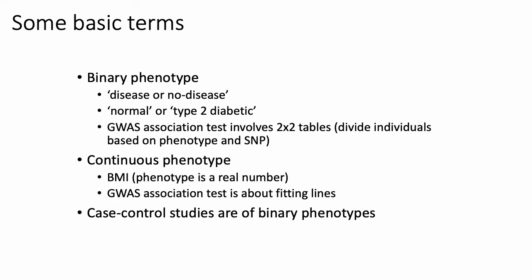In contrast, when you are looking at continuous phenotypes like BMI or height, or even continuous measurements indicative of type 2 diabetes, those association studies basically amount to fitting lines. We'll start with binary phenotypes because those are what case-control studies are, which is what you might classically think about when you think about GWAS.